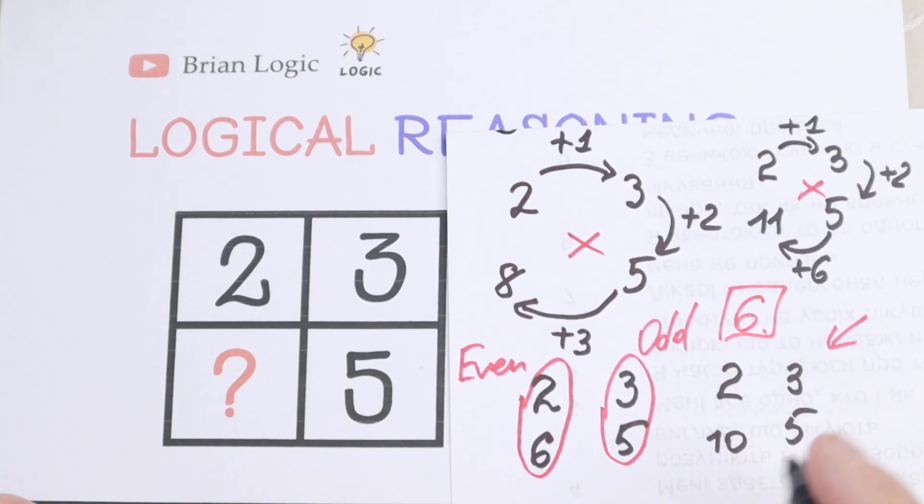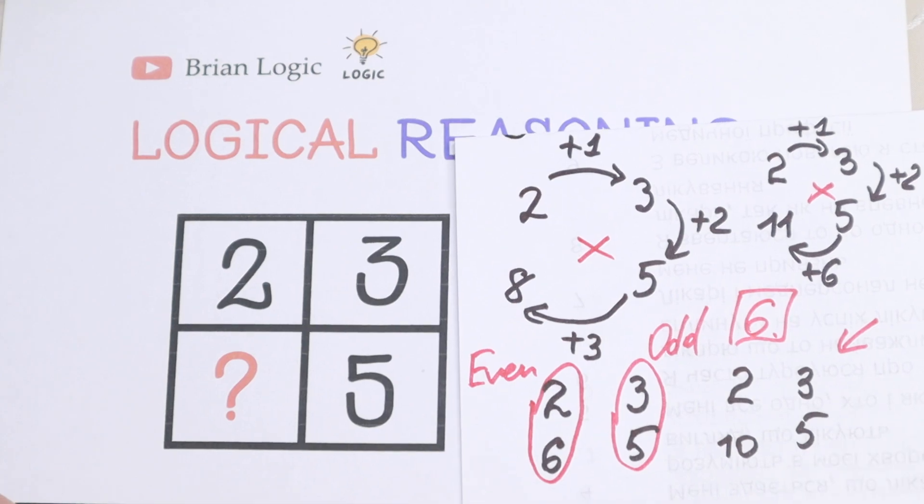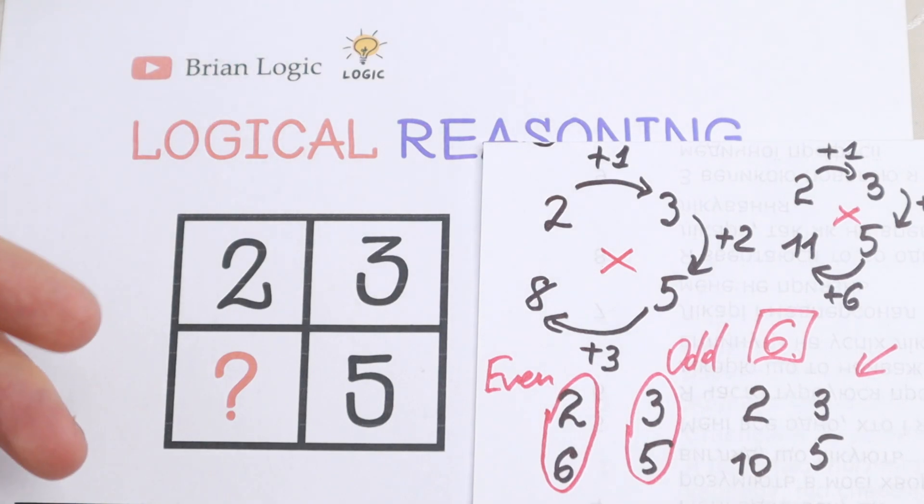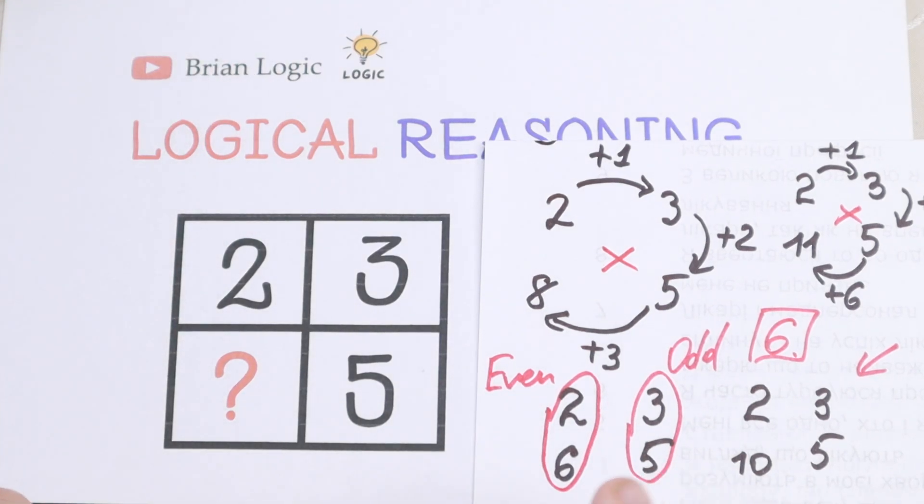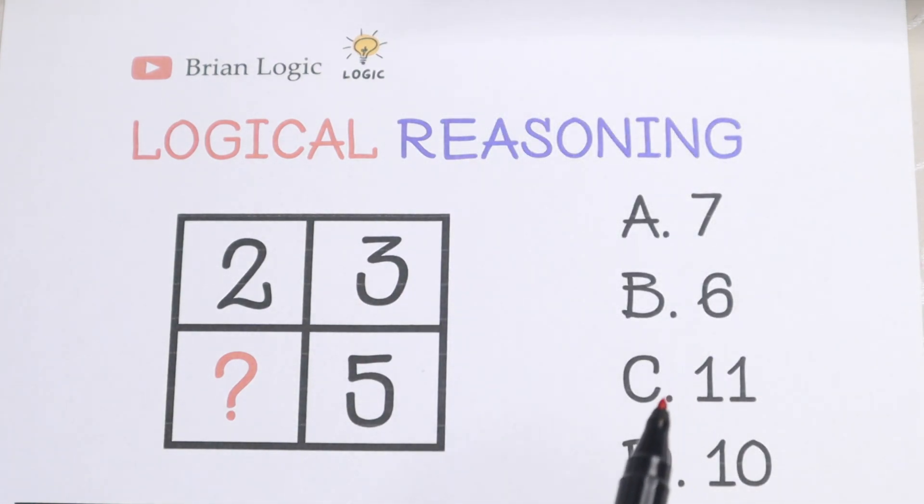But what do you think about this 2, 3, 5 and 10? Write your suggestion in a comment, it will be really interesting to read it. And of course, if you still have any questions, write a question in a comment, maybe you know how to solve it. I prefer this solution. Answer is 6, option B. And of course, thank you so much for watching, and see you in the next videos.